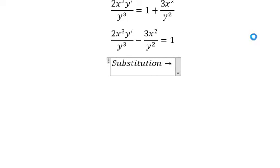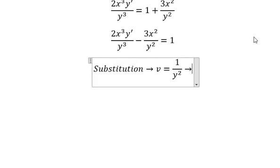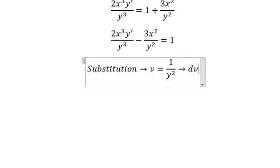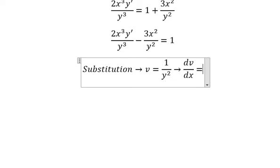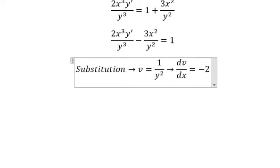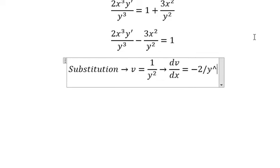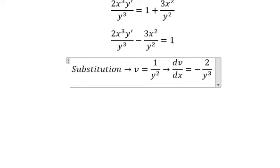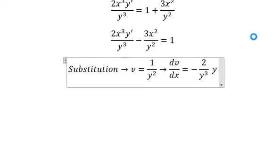So we put v equals to 1 over y squared. dv over dx equals to negative 2 over y to the power of 3, and we have first derivative of y.